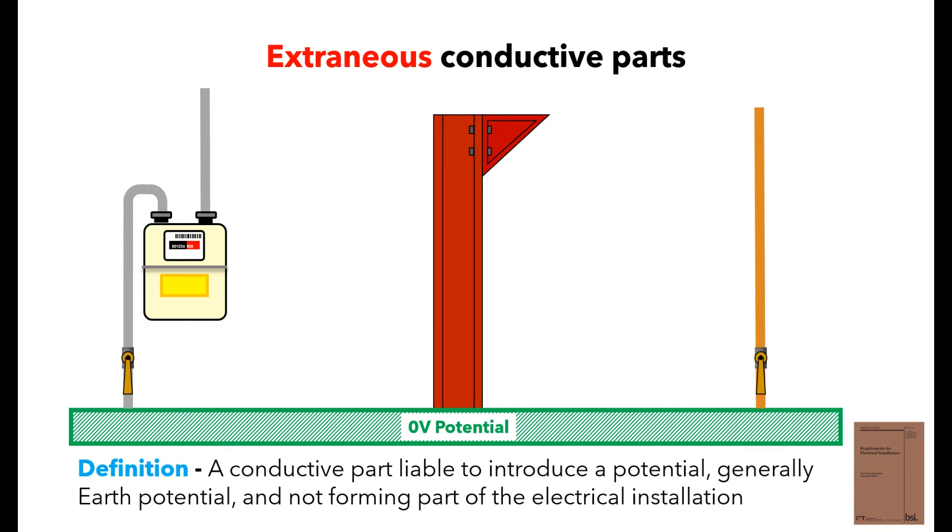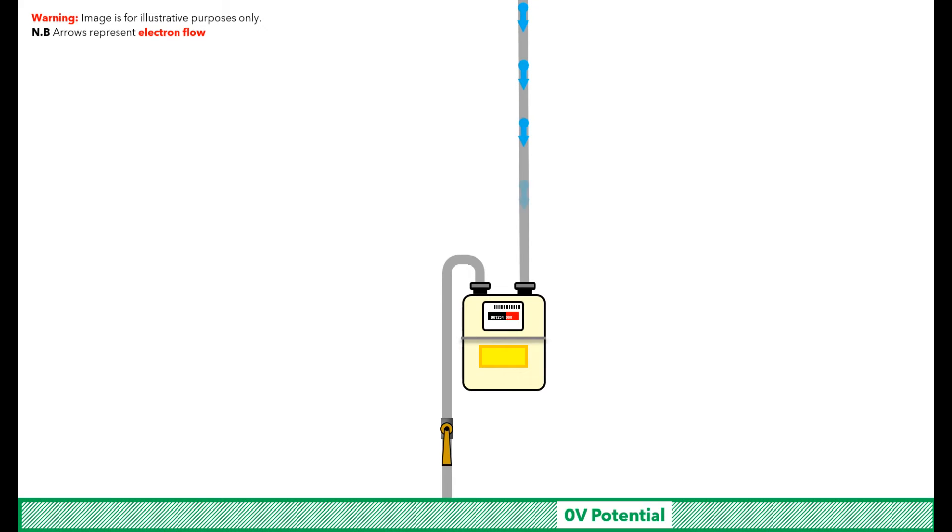Essentially, you have an earth rod, which in the event of a fault will allow electrons to flow down them to return to earth and that zero potential. In a fault condition, electrons are going to be attracted to that zero potential, and this means that the extraneous conductive part will become live, capable of giving a dangerous electric shock if touched.